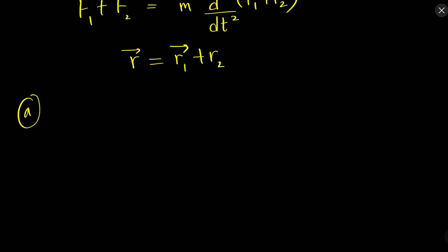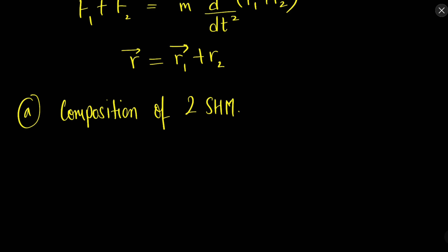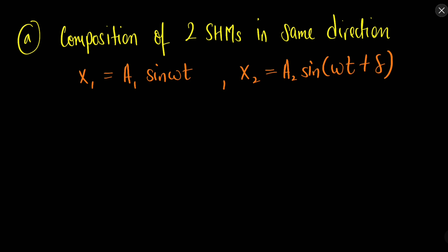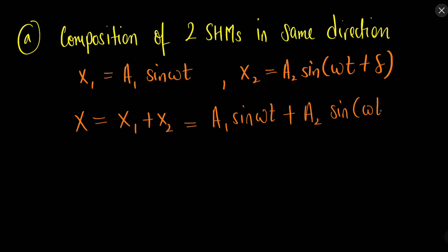Now we will take a few cases. The first SHM is given by x₁ = A₁ sin(ωt), and the second SHM is given by x₂ = A₂ sin(ωt + δ), where δ is the phase difference between the two SHMs. By the principle of superposition we will add them to get A₁ sin(ωt) + A₂ sin(ωt + δ).